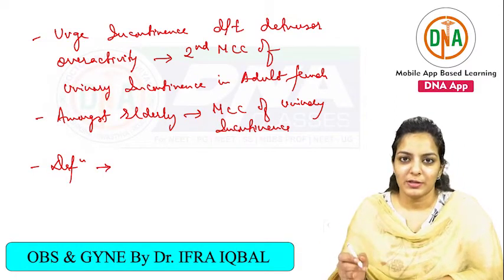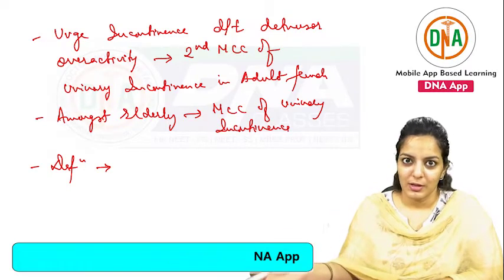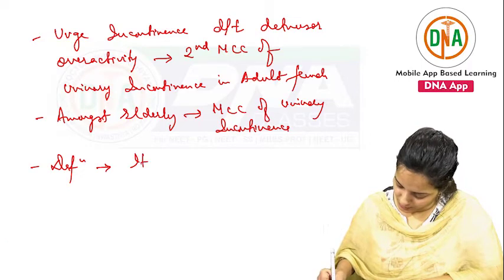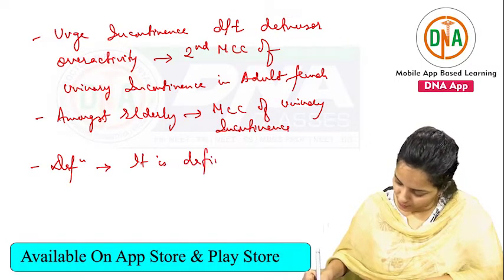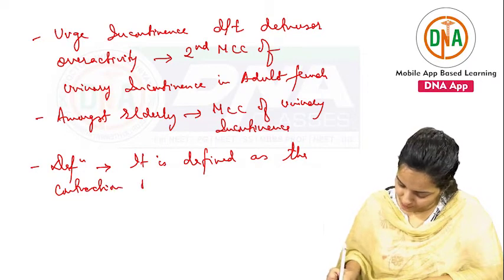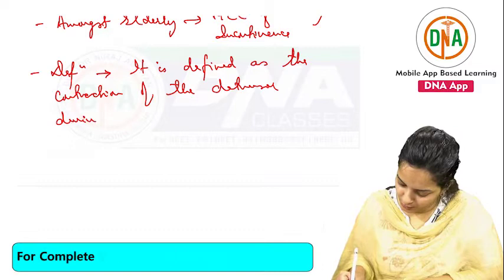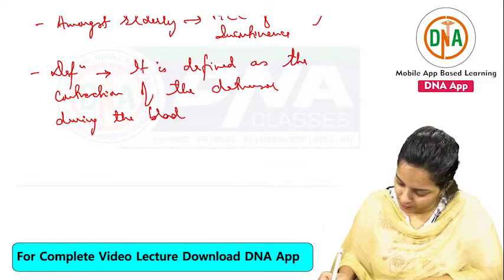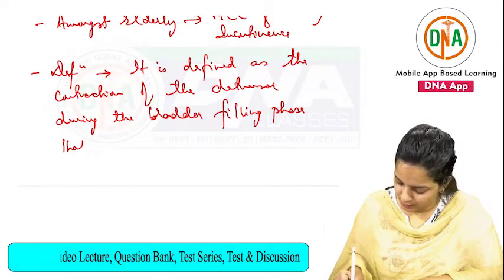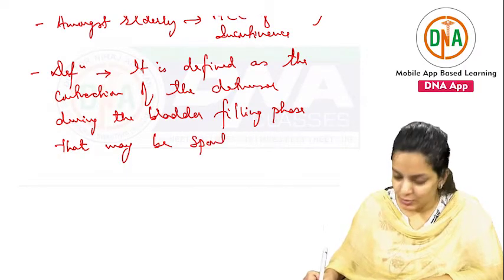Definition: Urge incontinence is defined as detrusor overactivity — spontaneous detrusor contraction during the bladder filling phase. The contraction may be either spontaneous or provoked.